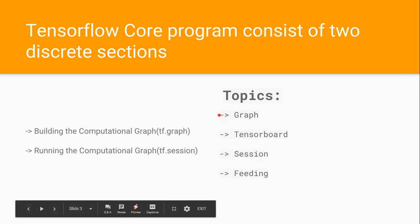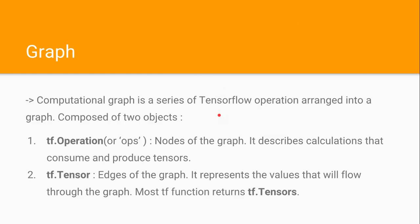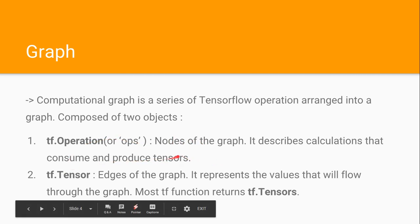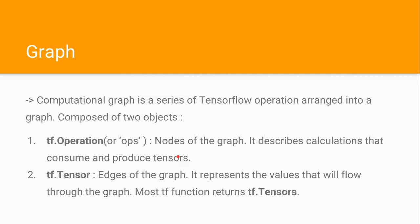We'll be covering graphs, tensors, sessions, and feeding in this video. A computational graph is basically a series of TensorFlow operations arranged into a graph. The graph consists of two objects: tf.operation and tf.tensor. tf.operation is basically nodes of the graph and tf.tensor is the edges of the graph. tf.operation describes calculations and consumes and produces tensors, and tf.tensor represents the values that will flow through the graph. Most TensorFlow functions return tf.tensor.